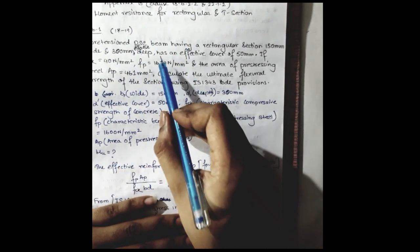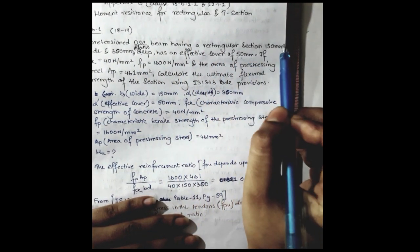The beam has an effective cover of 50 millimeter. fck equals 40 Newton per millimeter square.